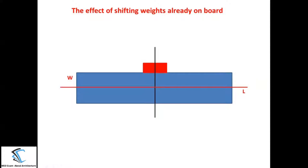It is not necessary that the cargo should initially be at the centre of flotation, but for simplicity I am considering the cargo is already on board at the centre of flotation. So the centre of flotation is here — the intersection point of the midship and the water line. When you are shifting the cargo, whether to the forward side or the aft side, you can analyse the effect on trim and drafts using this animation before we go to the numerical.